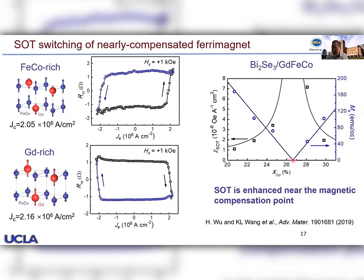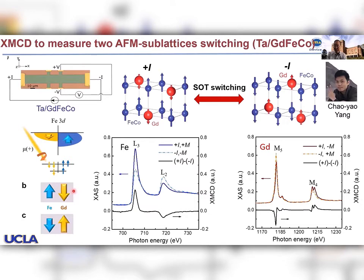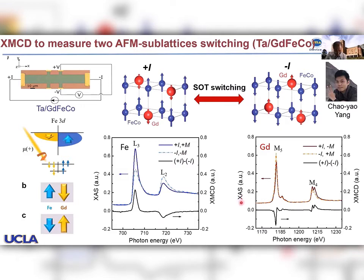For the iron case, L3 and L2 edges with different circularly polarized lights give x-ray magnetic circular dichroism (XMCD) signals. For the gadolinium case, due to its f-orbital character, the M4 and M5 edges show similar XMCD signals. The x-ray absorption spectroscopy confirms the element-selective magnetic signals for each sublattice. We then used nanosecond pulses — two nanosecond pulses — to perform write and read, showing consistently reversible switching.